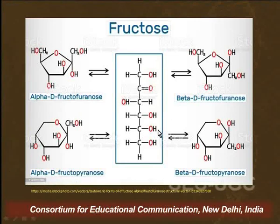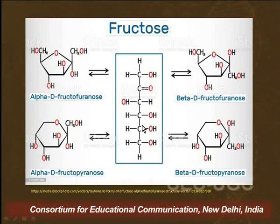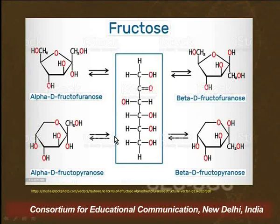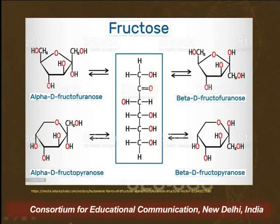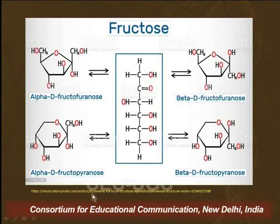The other way to represent fructose is in a pyranose structure. In pyranose structure, the ring is six-membered, and the basic structure is that of pyran — also a heterocyclic cyclic ether. Again, because of cyclization, we can get two isomers. If the cyclization takes place between the second carbon and the fifth carbon — that is, the hydroxyl group of the fifth carbon and the carbonyl group — we get a five-membered ring. If the cyclization takes place due to reaction between the OH on the sixth carbon and the carbonyl group on the second carbon, we get a six-membered ring.